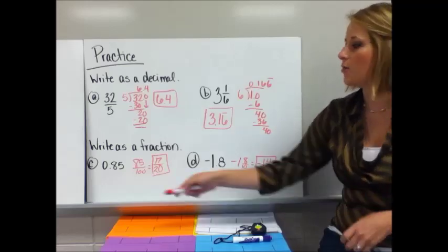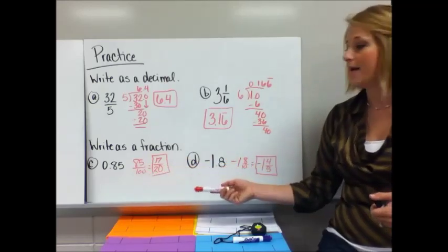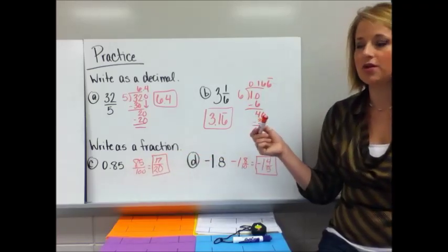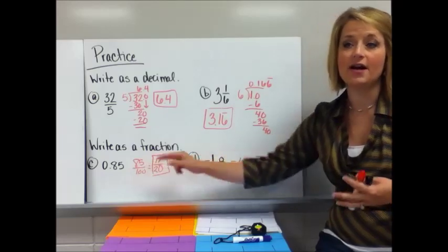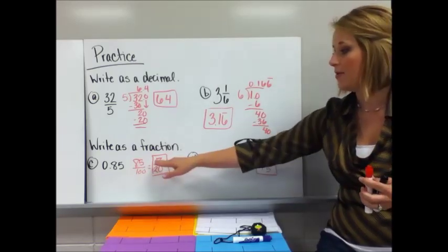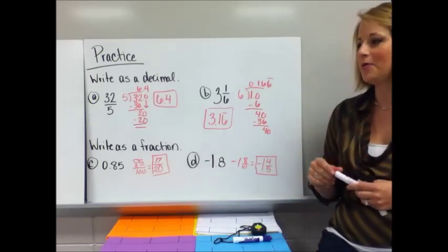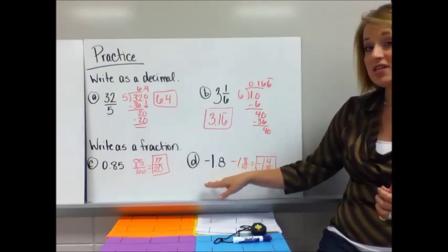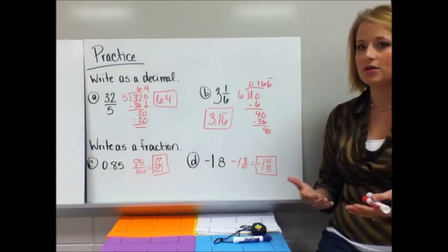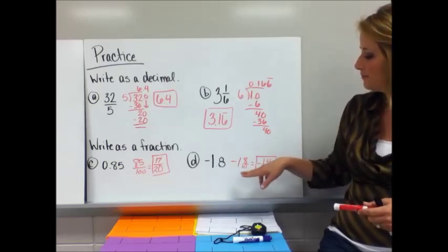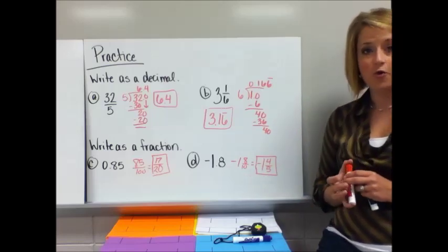For writing 0.85 as a fraction, I say it out loud: 85 hundredths. So I have 85 as the numerator and 100 as the denominator. I reduce by dividing by 5. Five goes into 85 seventeen times — I know 10 times 5 is 50, so I need 35 more to get to 85, and 7 times 5 is 35, giving me 17. And 100 divided by 5 is 20. For problem D, the answer is negative 1.8. When you have a negative to start with, it doesn't change — the decimal equivalent is still negative. For 0.8, that's 8 tenths, so I put 8 over 10, reduce by dividing by 2, and get negative 1 and 4 fifths.